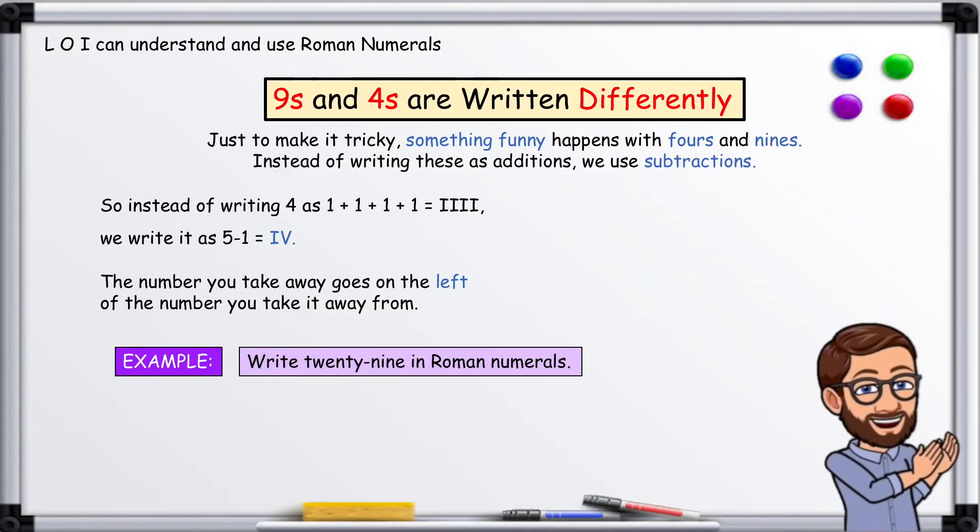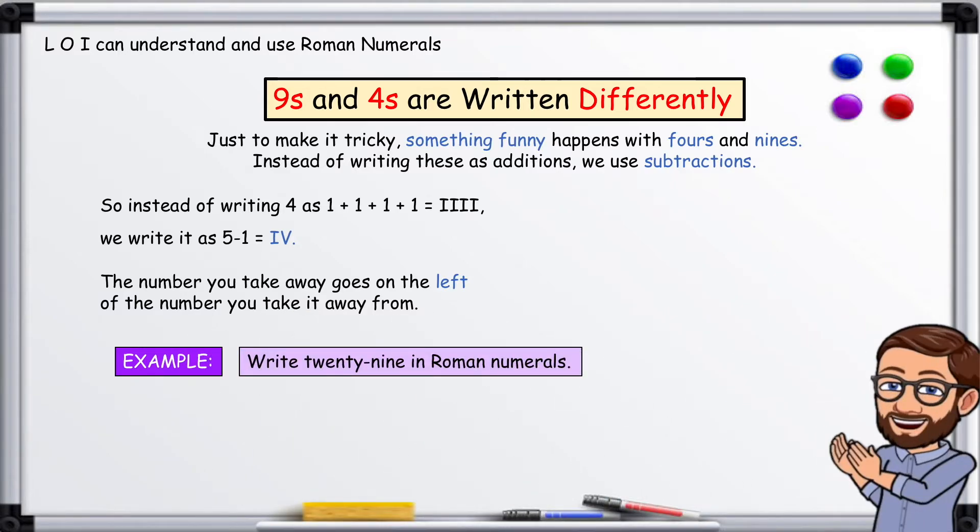Example, write 29 in Roman numerals. 29 equals 10 plus 10 plus 9. 10 equals X, and 9 equals 10 minus 1, which is IX. So we write XXIX.